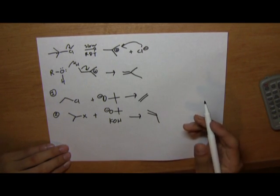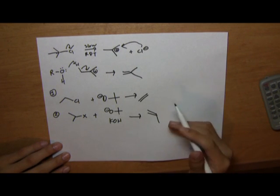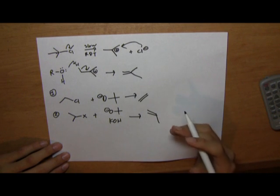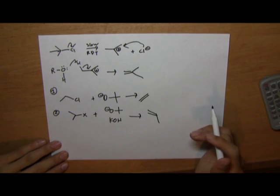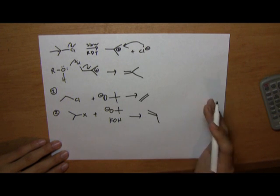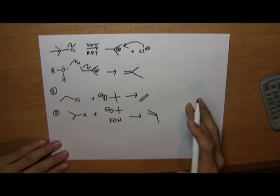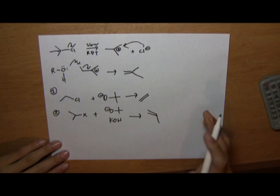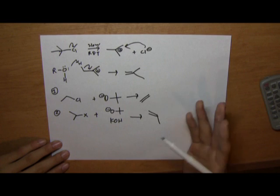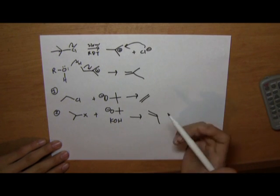For tertiary alkyl halides, we can either use a weak solvent base and proceed through E1, or we can use a strong base and proceed through E2. Now E1, since it competes with SN1, is generally not preferred to create double bonds, just because it's not a good yield. So if our intention is to create a high yield of double bonds, we use E2.